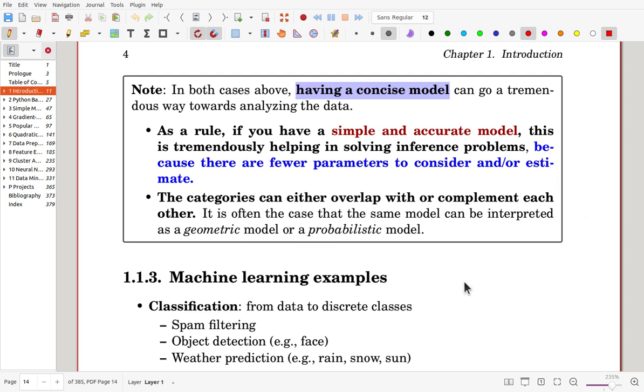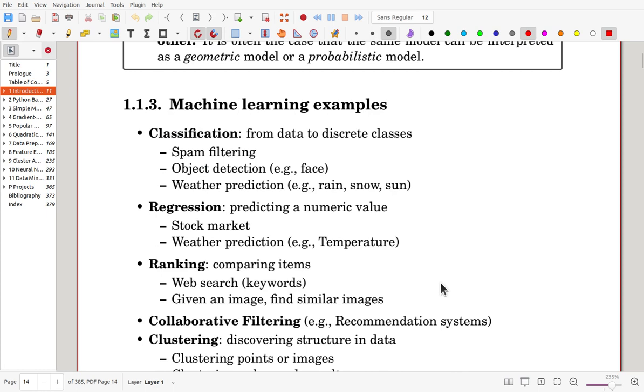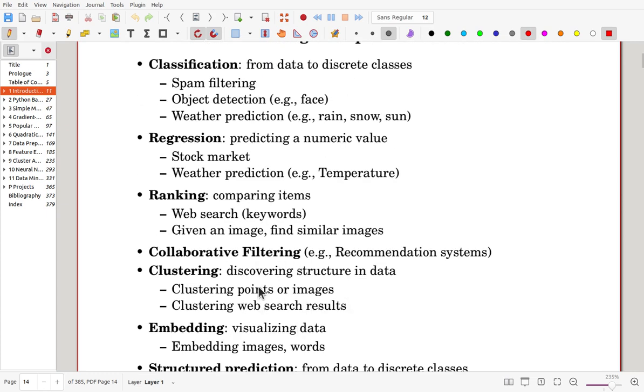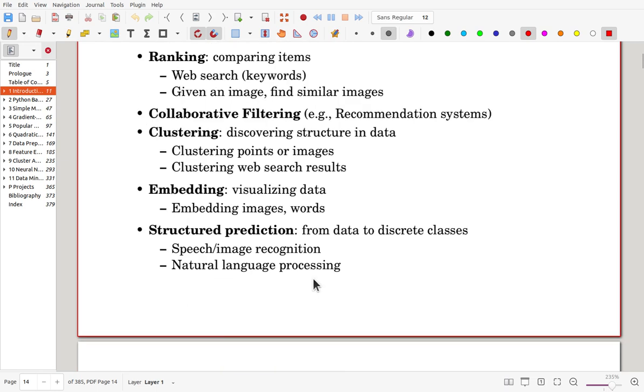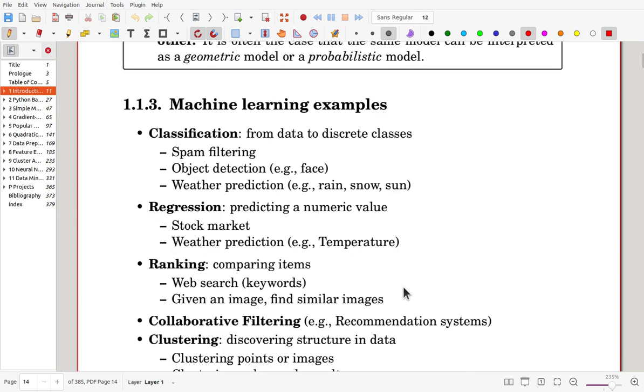however, the problems are not really separable. Sometimes, some model, the same model, can be interpreted as a geometric model, or probabilistic model. Either way, that can be described. Here, we have machine learning examples. Classification, and regression, ranking, and filtering, clustering, embedding, and structured prediction. These are all machine learning examples.